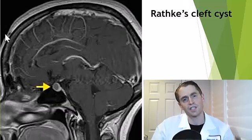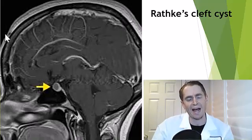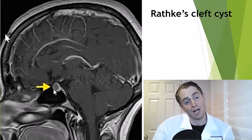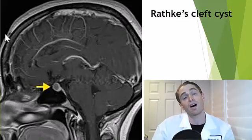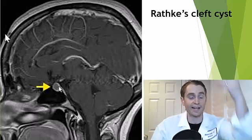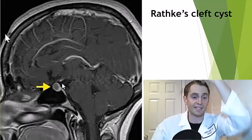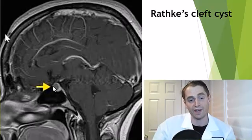Here's a different type of cyst: Rathke's cleft cyst, arising from the embryonic structure Rathke's pouch. Sometimes these cysts can grow and compress surrounding structures and cause symptoms, but they're often benign incidental findings located at the midline.